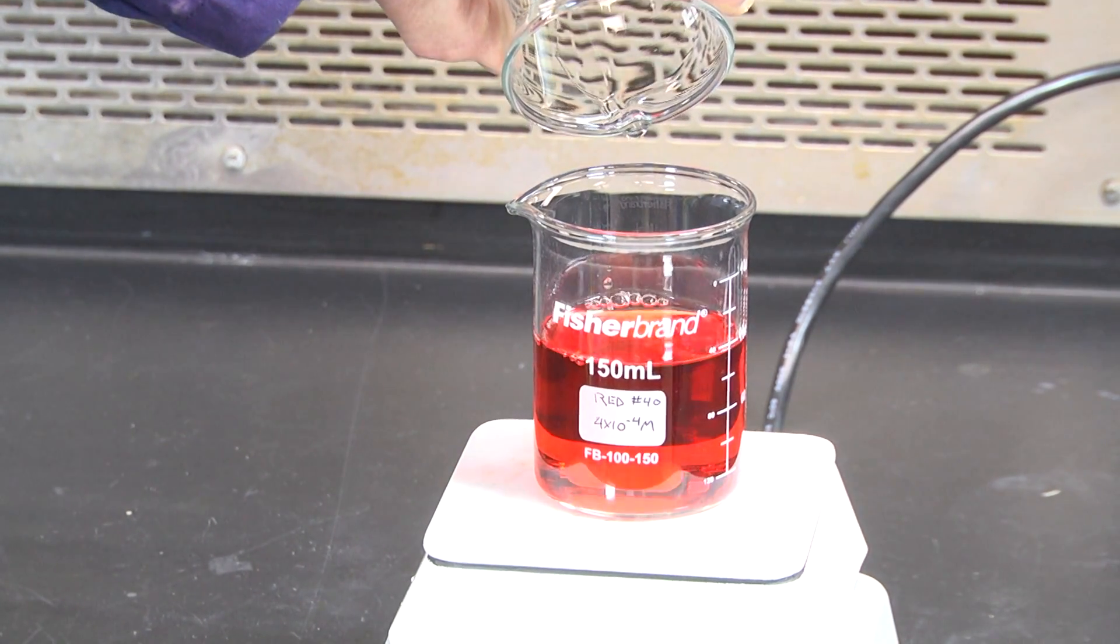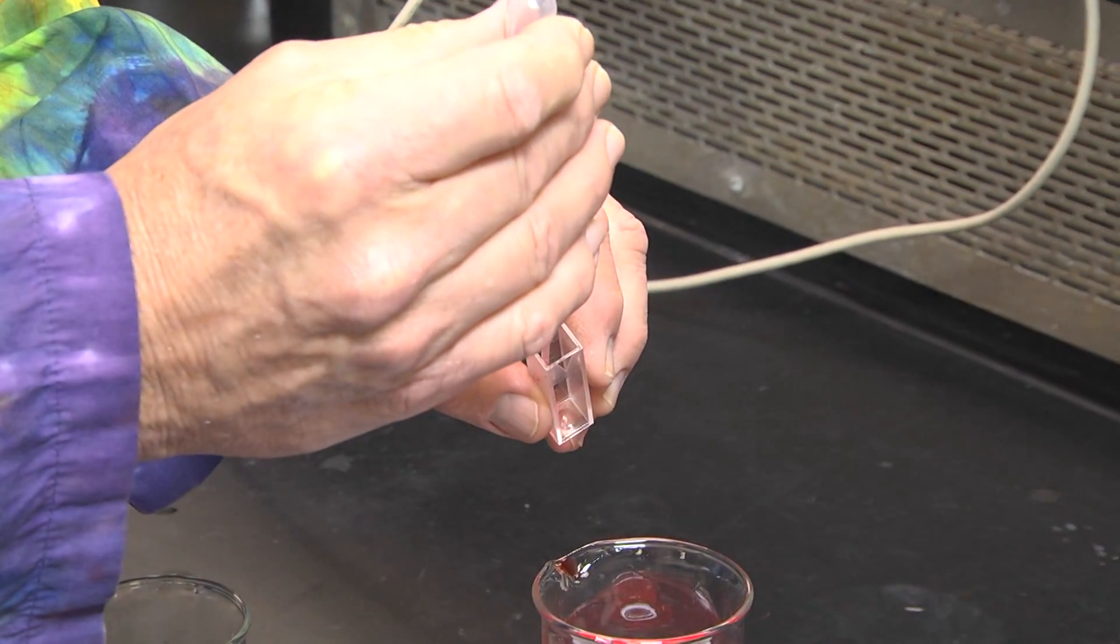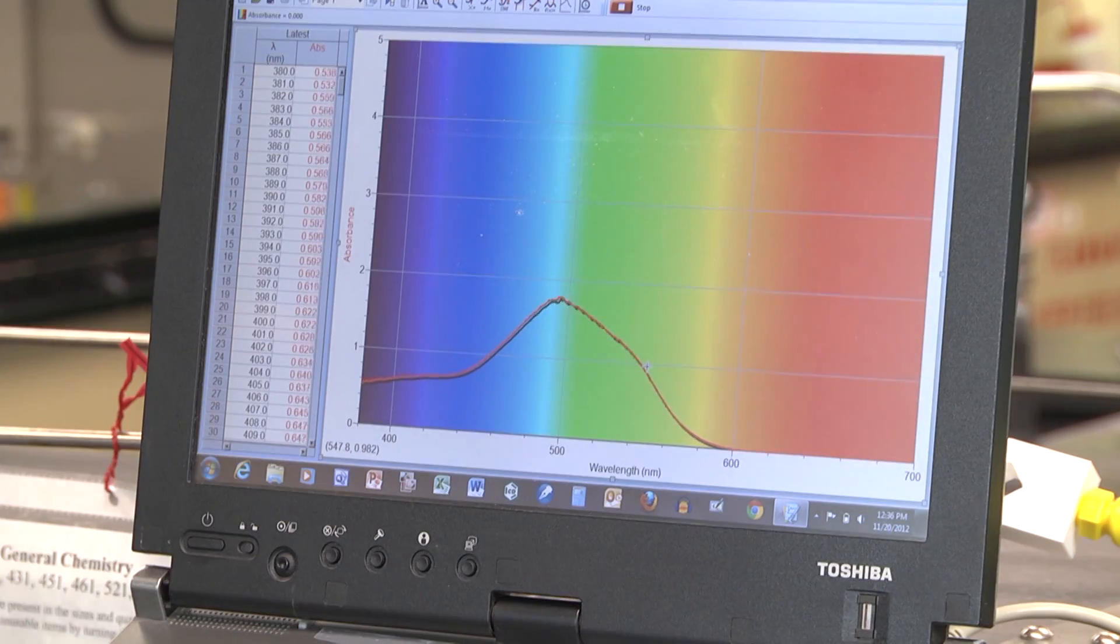This short video will illustrate the bleaching of a food dye with sodium hypochlorite and the monitoring of the change in absorbance using a vernier spectrometer.